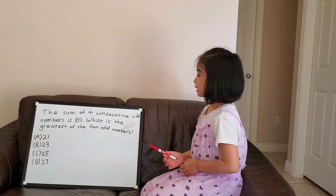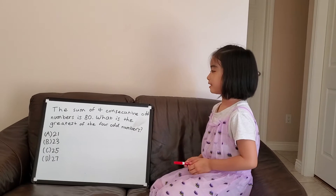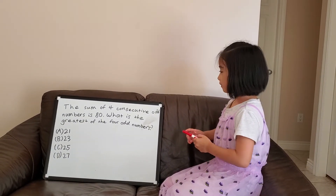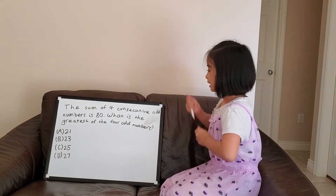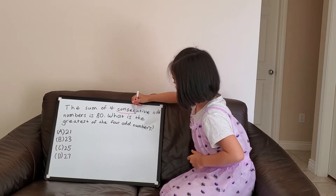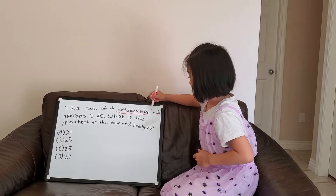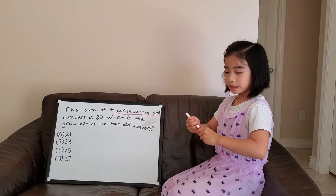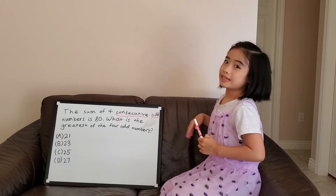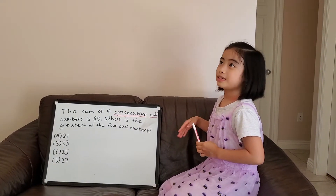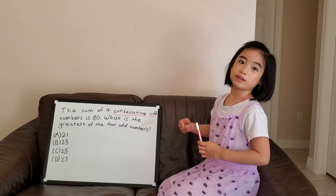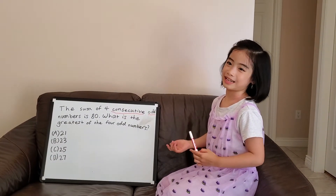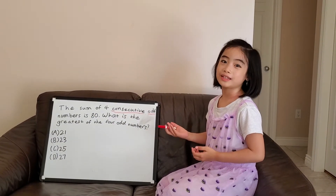This question gives us two very important pieces of information. First is consecutive. Second is odd. Consecutive means connected numbers like 1, 2, 3, 4. And odd numbers we all know are like 1, 3, 5, 7.